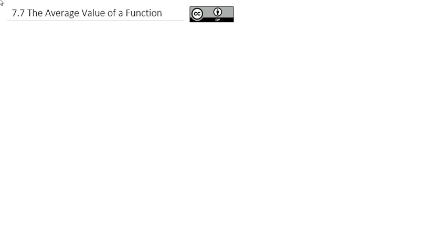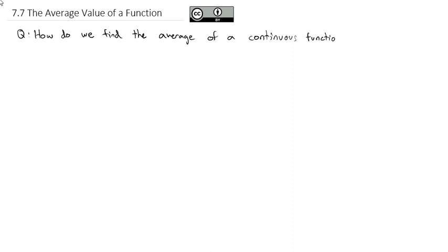As we look at applications with more than one variable, we're going to take a look at the average value of a function. The question we're going to be answering today is how do we find the average of a continuous function? We'll start by looking at how we calculate the average. If I wanted to know the average of the numbers 3, 4, and 5, we add those numbers together and then we divide by the number of things there are to get our average of all three.